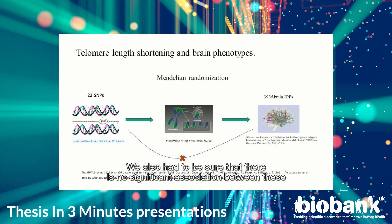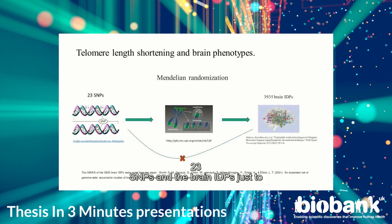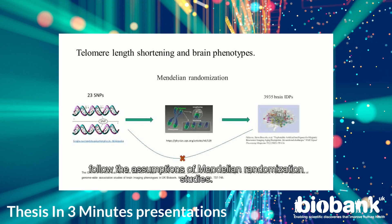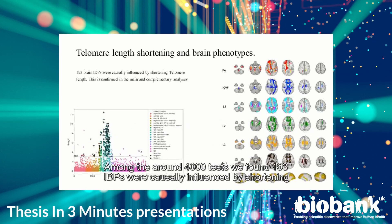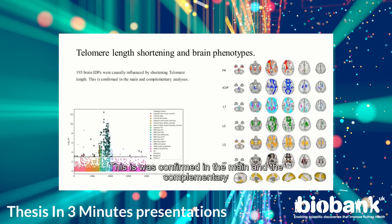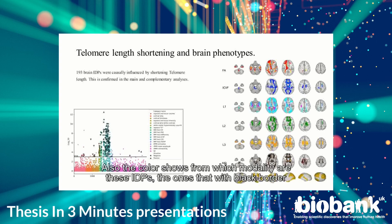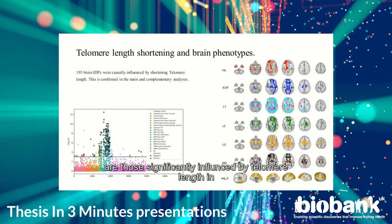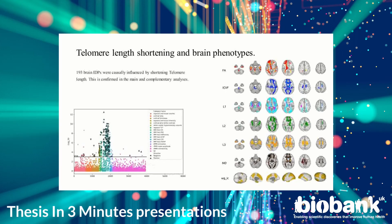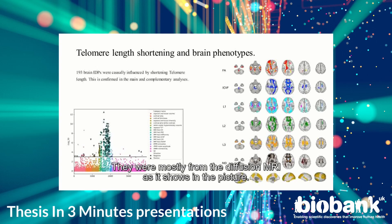We also verified that there is no significant association between these 23 SNPs and the Brain IDPs directly, to satisfy the assumptions of Mendelian randomization studies. Among the around 4,000 tests, we found 193 Brain IDPs were causally influenced by shortening telomere length, confirmed in the main and complementary analyses. The figure on the left shows all IDPs and the FDR p-value correction line. The color indicates from which modality each IDP comes. Those with a black border are significantly influenced by telomere length in both the main and complementary analyses.